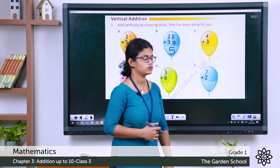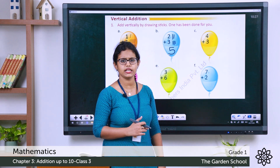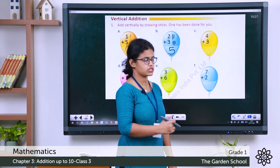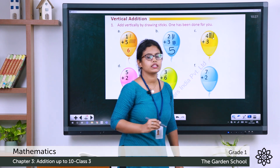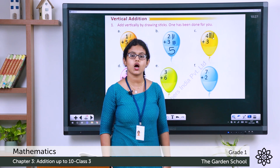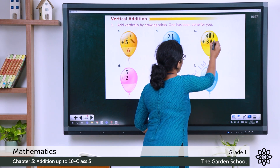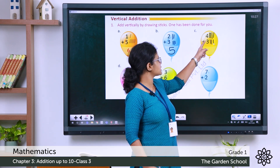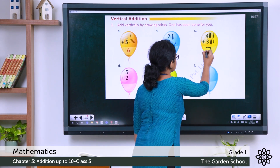Next: 4 plus 3. Draw 4 sticks for number 4: 1, 2, 3, 4. Then add 3 sticks for number 3: 1, 2, 3. Count all sticks: 4, 5, 6, 7. It gives a total of 7. So 4 plus 3 is 7.